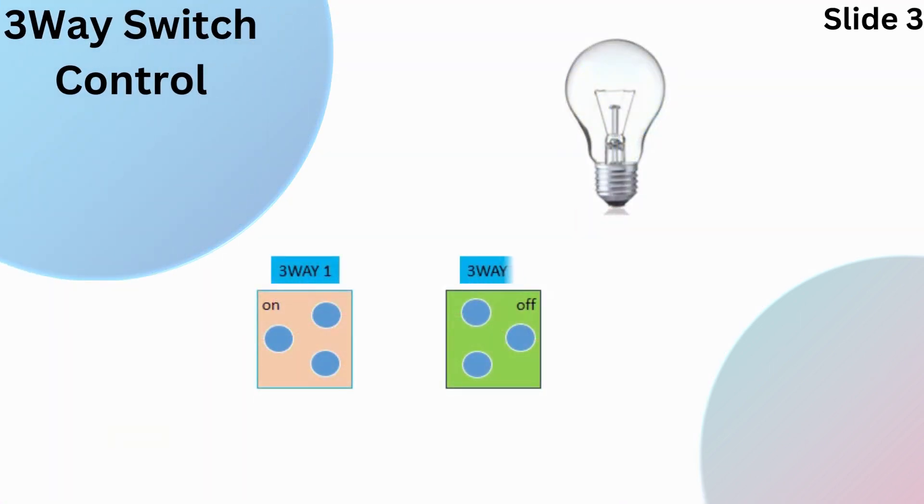When you turn on the first switch at location 1, it completes the electrical circuit and sends power to the common terminal. The common terminal on switch 1 is connected to one of the traveler terminals, which sends power to the second switch.